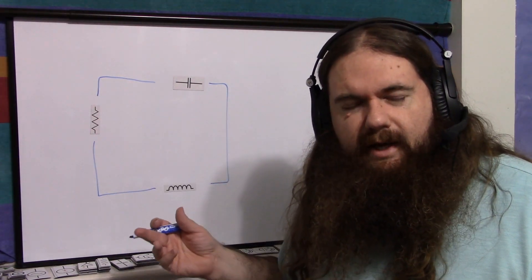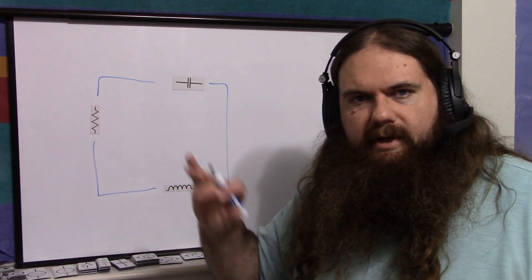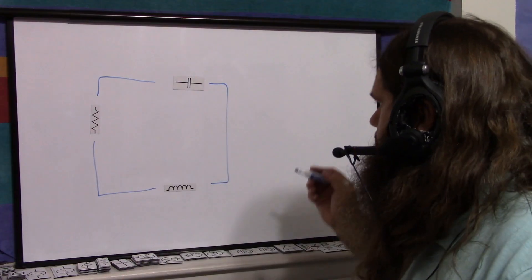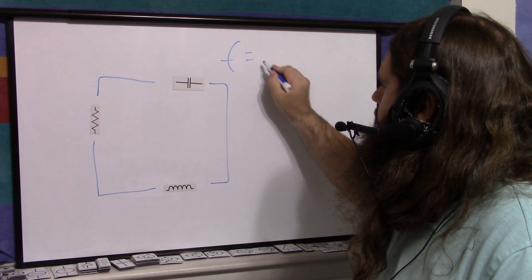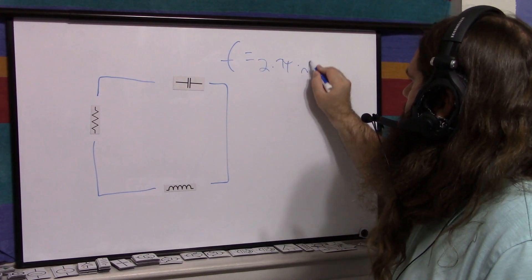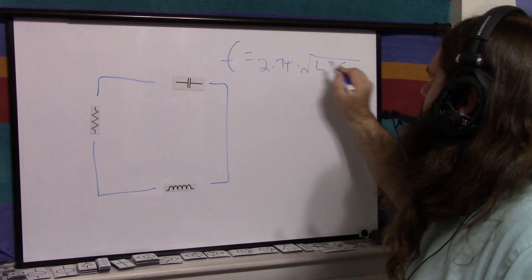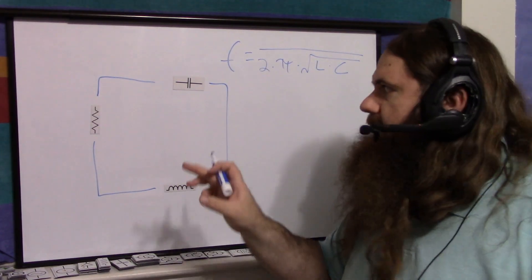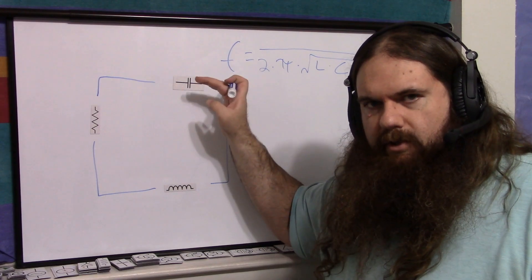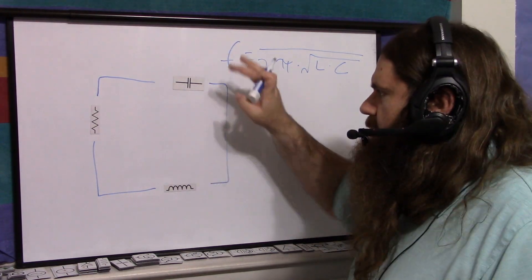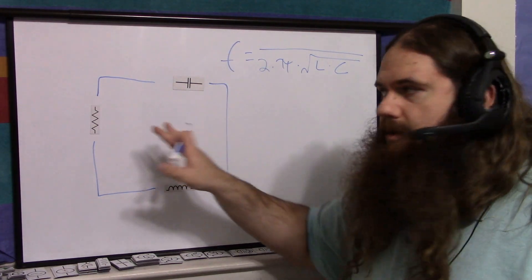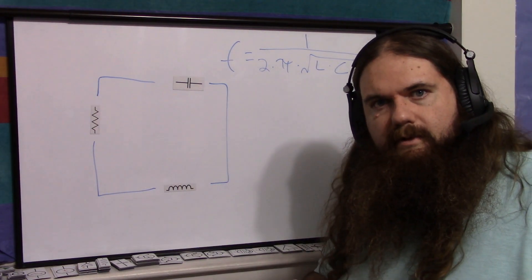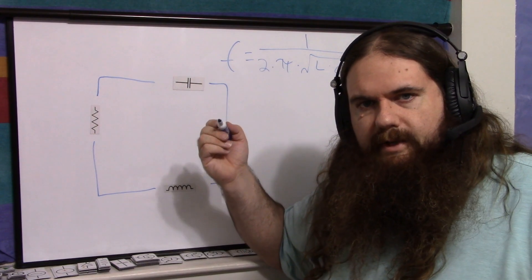Instead of a timing constant for how long it takes to charge and discharge, there's a frequency formula: the frequency is 1 over 2 times pi times the square root of the inductance times the capacitance. That full expression under the reciprocal is the wavelength — how long it takes for the capacitor to go through a full cycle and get back to the same charge. So you take the reciprocal, divide it into one, and that's the frequency.